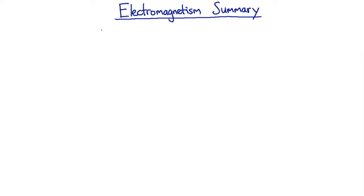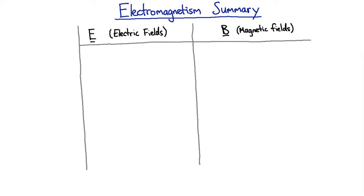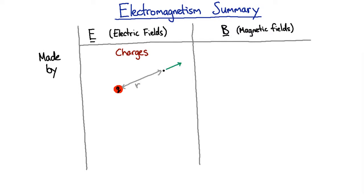We've learned about two kinds of things: electric fields and magnetic fields. We know that electric fields are made by charges, and Coulomb's Law lets us be precise about that. If we have a point charge Q and we want to know the electric field a distance R away from that point charge, it points away from Q if Q is positive, and the strength of the electric field is given by KQ over R squared.